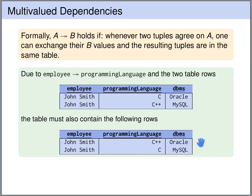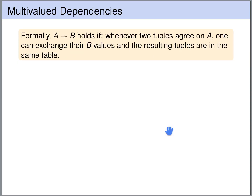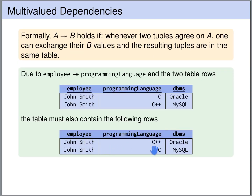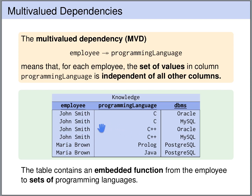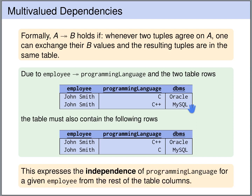So John Smith, C++ Oracle is in the relation, and also John Smith, C, MySQL is in the relation. So indeed we can exchange these values — they are independent of the database management system and we still have rows in the relation. So exchanging the values for B expresses that the values for B are independent of all of the other attributes; in this case, independent of the database management system.